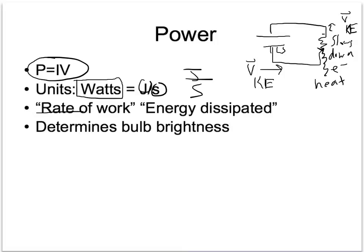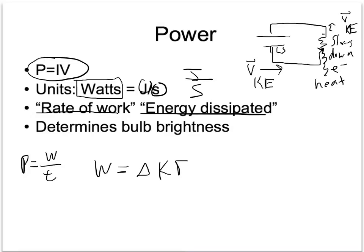Power is the rate of work, and this relates back to power equals work over time. It's the amount of work being done by that resistor to get rid of some of the kinetic energy, because work is change in kinetic energy. So power is change in kinetic energy over time — it's how much per second we change the electron's kinetic energy. It does, in fact, determine bulb brightness. The higher the wattage of a bulb, the brighter it is.